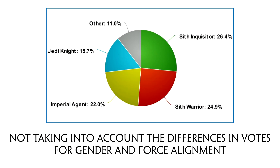The first chart you're seeing is how the results of the vote look without taking into account the variation for gender and alignment with the Force, instead purely looking at the class distribution. And I realize that if someone voted Dark Side female Sith Inquisitor, that doesn't mean they also prefer the other variants of the Sith Inquisitor over everything else, but still I'd like to show you the chart this way for the sake of simplicity.